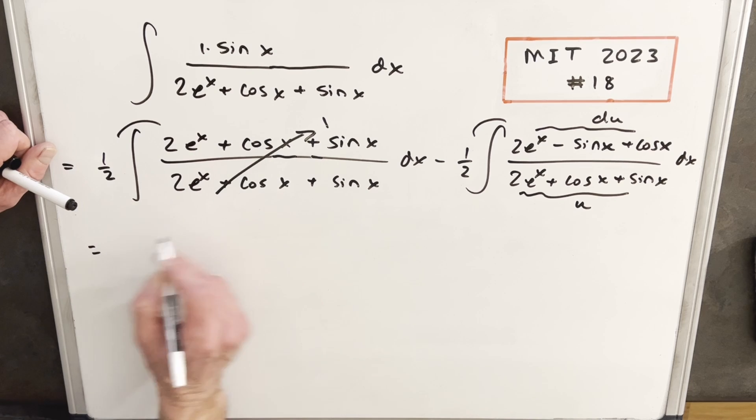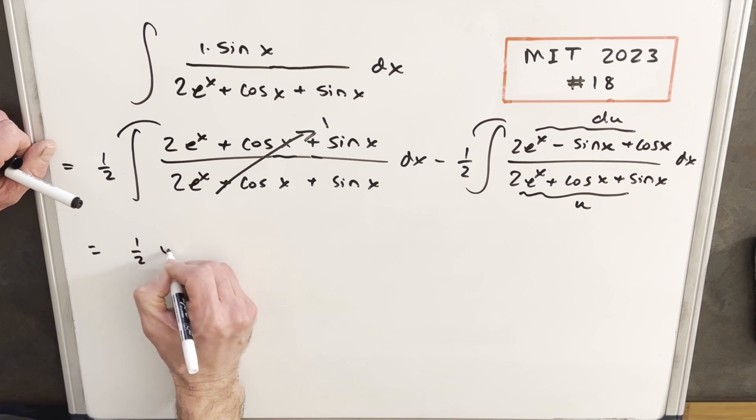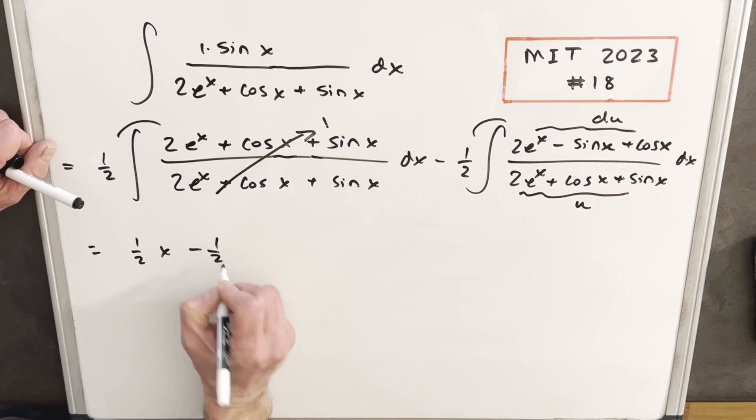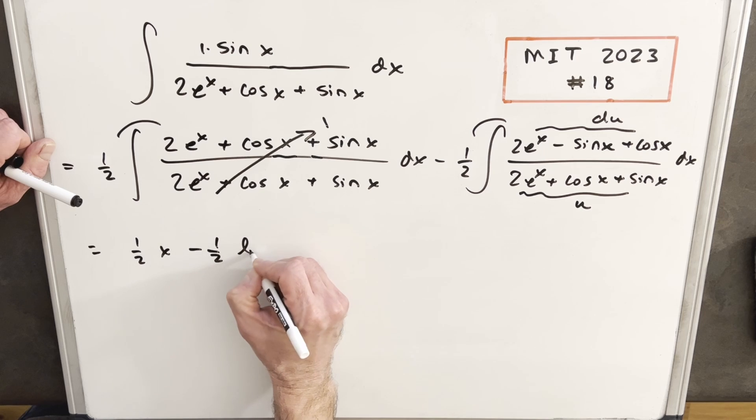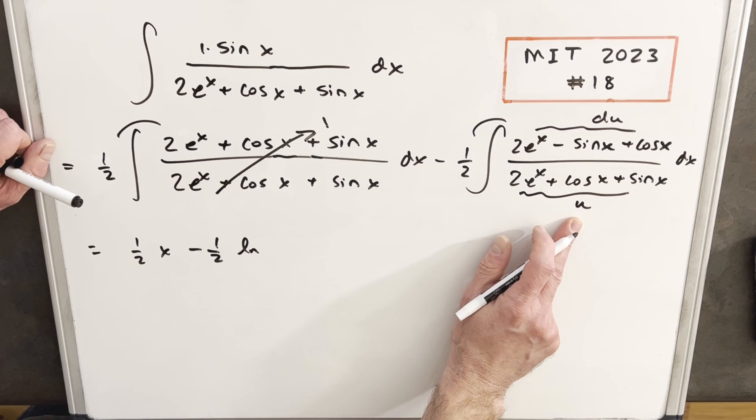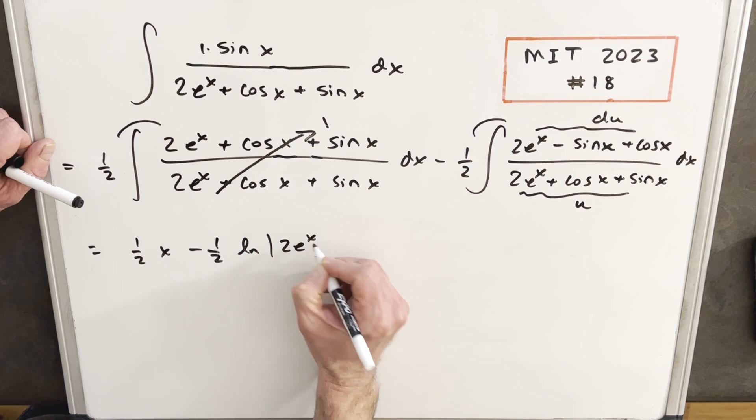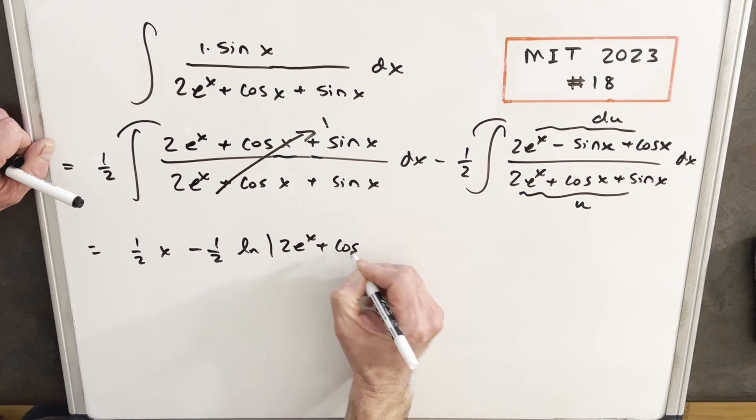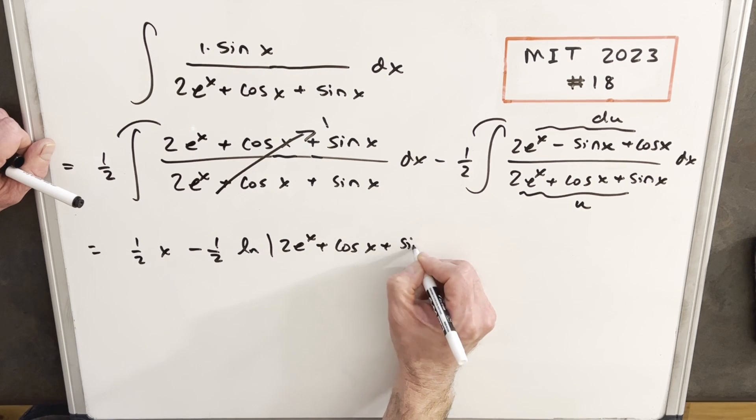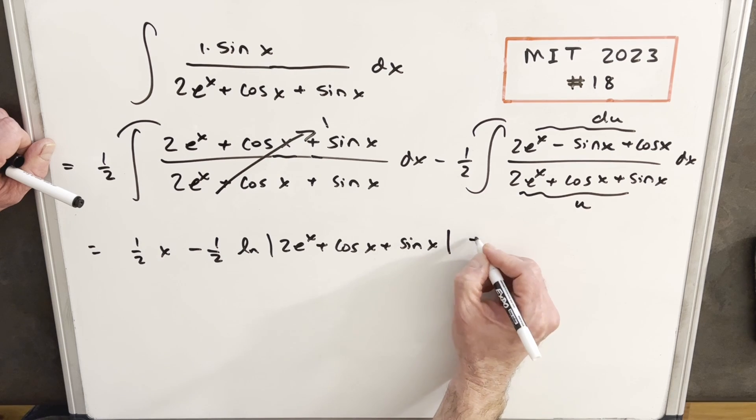So integrating this, integrating 1, we're going to have half x, then we're going to have minus a half, and then this is just going to be natural log of u. Okay, but u is just all this business, so we're going to have absolute value 2e to the x plus cosine x plus sine x plus c.